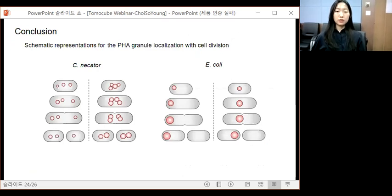Based on this observation, we can draw this schematic representation for the PHA granule localization during the cell division process. In native PHA producer, there is a granule-associated protein which controls the formation and localization of PHA granule during cell division by interacting with PHA granule and the bacterial nucleoid. It contributes to the relatively equal distribution of PHA granule to the daughter cells.